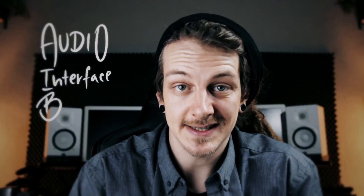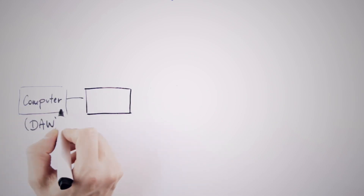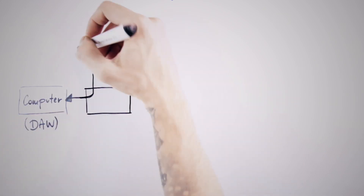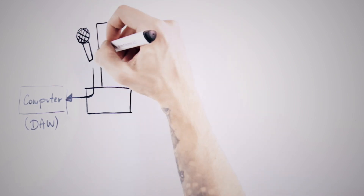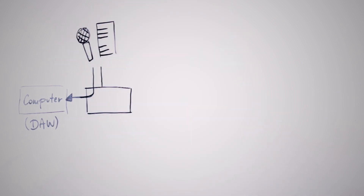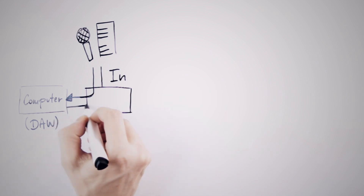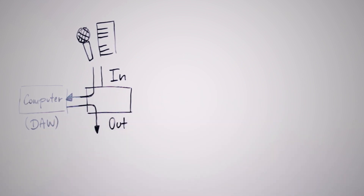Audio interface basics. Our audio interface is a sound card. It's a device which communicates with your computer, converting analog input signals — like microphone, keyboard, or guitar — into a digital signal so your computer can read it. Those are the inputs. It also turns digital signals from your computer into audio signals, called the outputs.